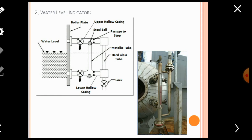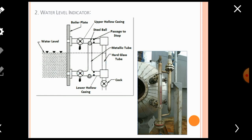Now for the working principle: to measure the water level present inside the boiler shell, first open the steam valve and water valve respectively. This creates an open circuit between steam and the glass tube, and between water and the glass tube. High-pressure steam moves through the horizontal steam tube and reaches the glass tube, while water from the horizontal water tube also moves and reaches the hard glass tube. Since glass is transparent, one can easily find the water level inside the glass tube, which is a parallel indication of the water level inside the boiler shell.